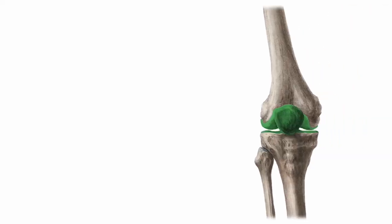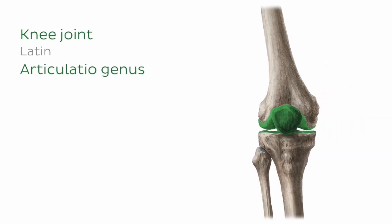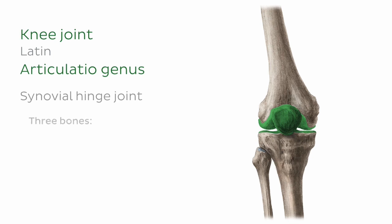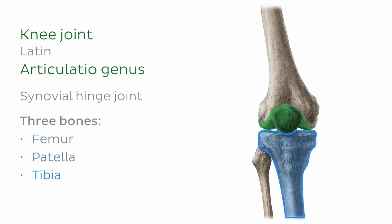Here we can see the knee joint highlighted in green from an anterior perspective. Our tutorial will feature bones that contribute towards this joint, as well as soft tissues that support it, so this is mainly for context. The knee joint is a synovial hinge joint, which is formed by three bones: the femur, the patella, and the tibia. It's worth noting that the femur is actually a bone of the thigh, but because it contributes towards the knee joint, we'll discuss it briefly in our tutorial.